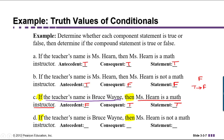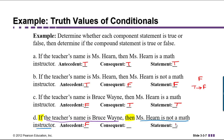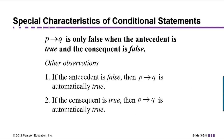The order matters when we're talking about the conditional. In part D, the antecedent is 'the teacher's name is Bruce Wayne,' which is false. So it doesn't matter what the truth value of the consequent is — we know the overall statement is going to be true. The consequent 'Ms. Hearn is not a math instructor' is false, so we have false implies false, which is true. That strikes a lot of people as strange, but with the conditional, false implies false is actually true. P implies Q is only false when P is true but Q is false. If the antecedent is false, then P implies Q is always true. And if the consequent is true, then P implies Q is always true as well.